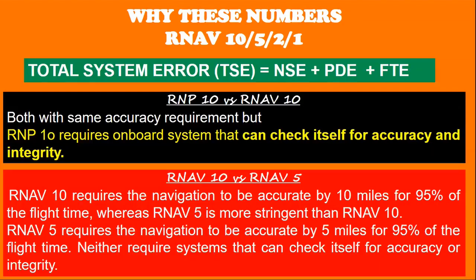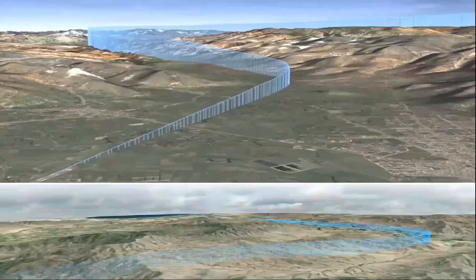RNP 10 versus RNAV 10: both have the same accuracy requirement, but RNP 10 requires a navigation system on board that can check itself for accuracy and integrity. RNP 10 requires navigation accurate to 10 miles, whereas RNP 5 is more stringent, requiring accuracy to 5 miles for 95% of the flight time. Neither requires systems that can check themselves for accuracy or integrity. Area navigation has transformed aviation by enabling more efficient, cost-effective, and safer air travel. As aviation enthusiasts, let's embrace the future of navigation and its ever-evolving possibilities.